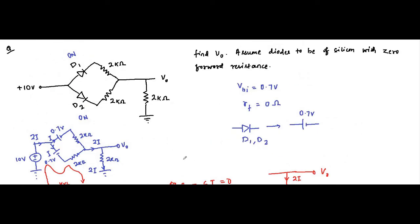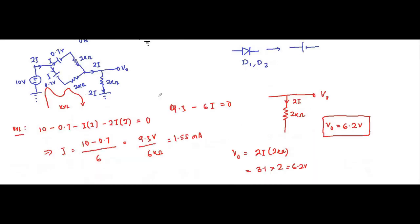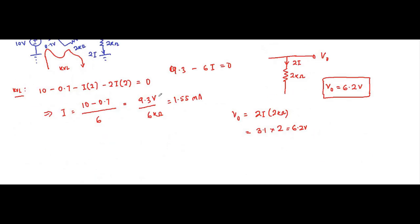This question was related to figuring out the state of the diodes depending on how they are connected, then replacing the diode with their equivalent circuit, then using basic network analysis techniques to find the network parameters. Here we calculated the output voltage, and the result is 6.2 volt.